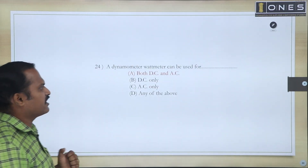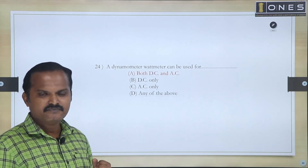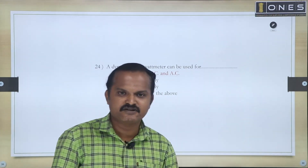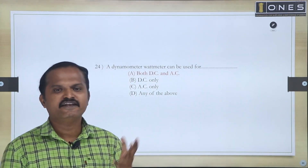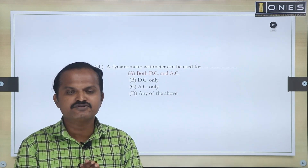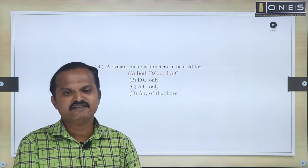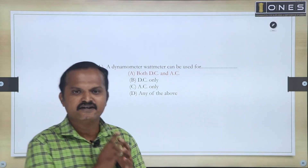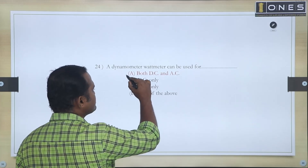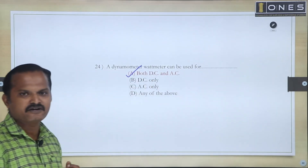Next question: A dynamometer type wattmeter can be used for measuring both AC as well as DC power.